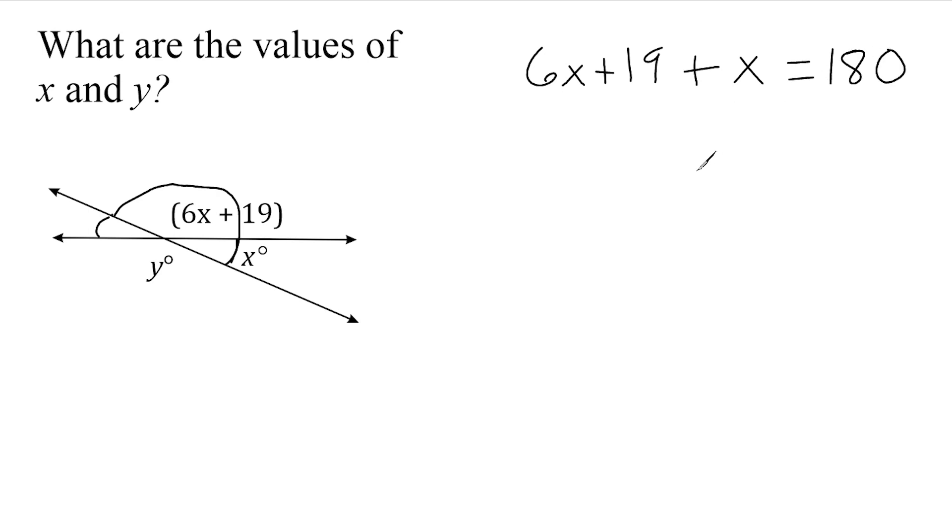Now all we have to do is isolate the x to figure out what it is equal to. So let's take 6x plus this 1x here and write that as 7x and just slide down this constant of 19 and set that equal to 180 degrees. Now we're going to take this positive 19 and do the opposite, which is to subtract 19 from both sides. And that ends up giving us 161. And that leaves us with 7 times x over here on the left.